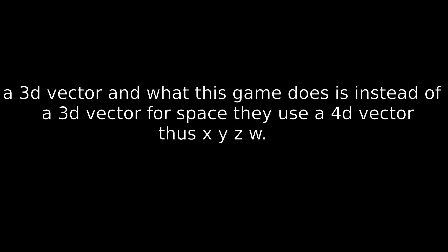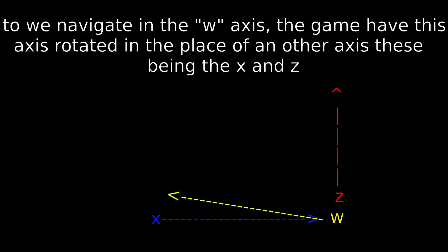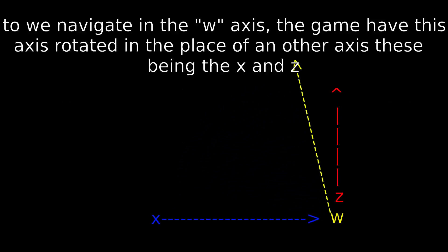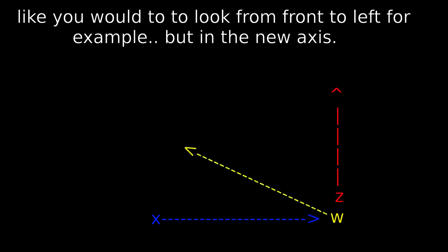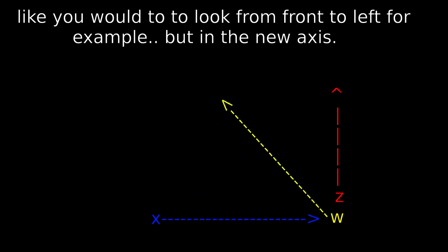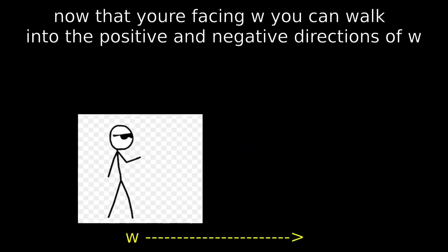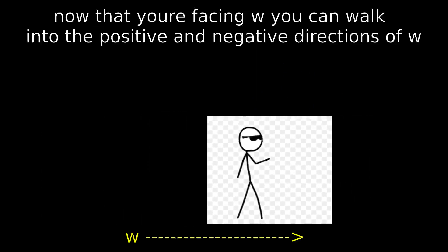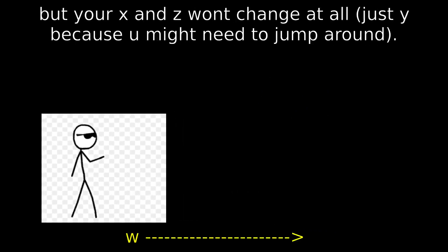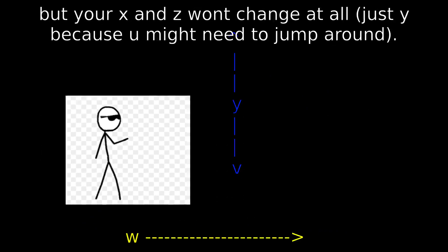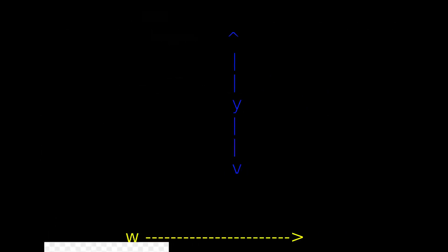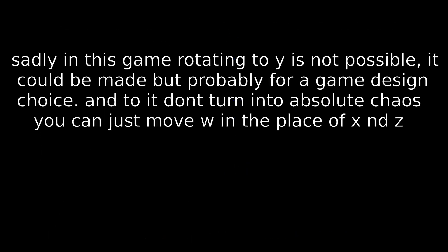Thus XYZW. To navigate in the W axis, the game has this axis rotated in the place of another axis, these being X and Z, like you would to look from front to left for example. But in the new axis, now that you're facing W, you can walk into the positive and negative directions of W, but your X and Z won't change at all — just Y, because you might need to jump around. Sadly in this game rotating to Y is not possible.